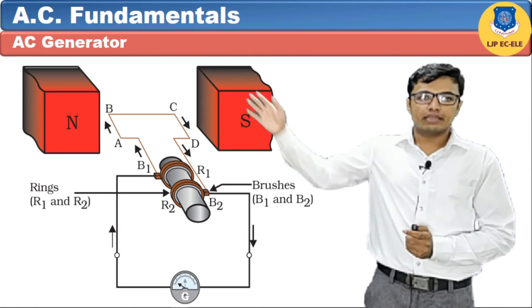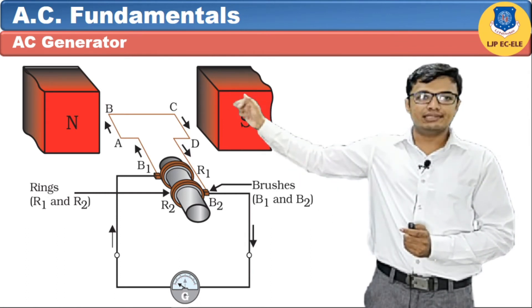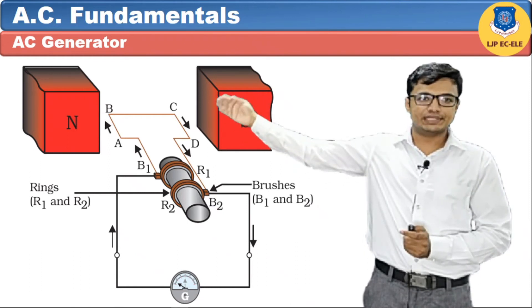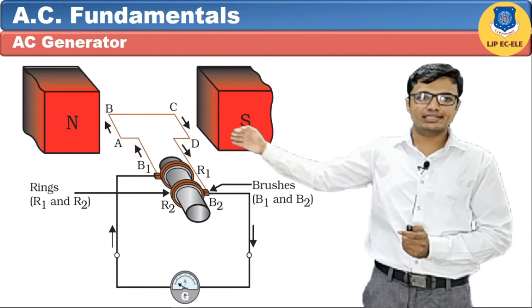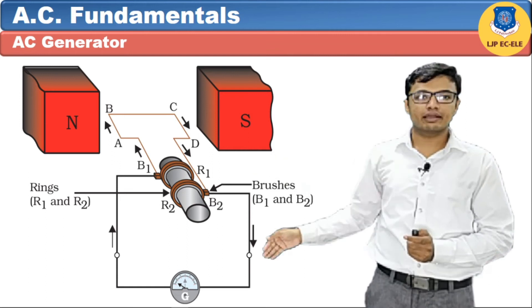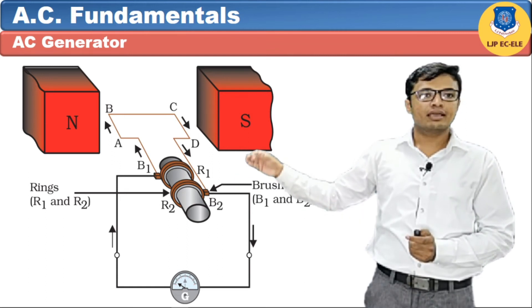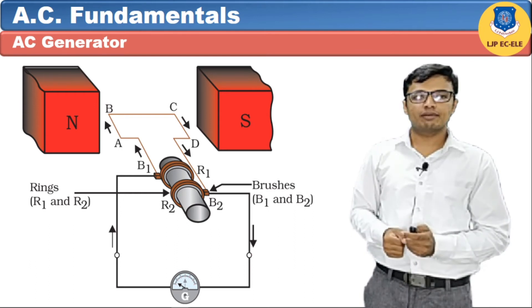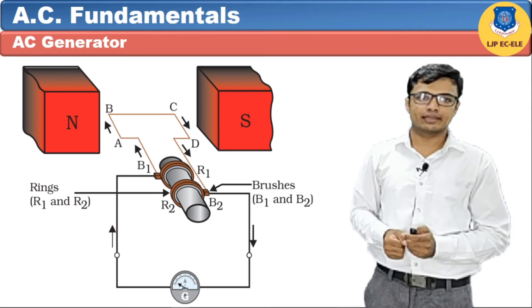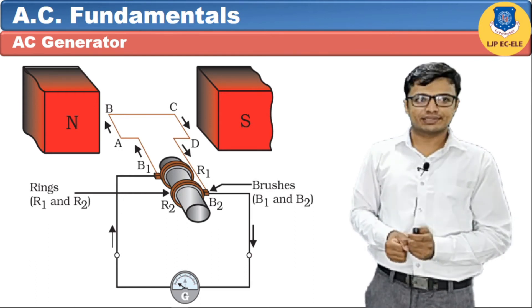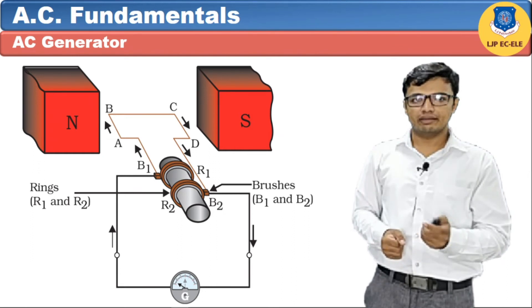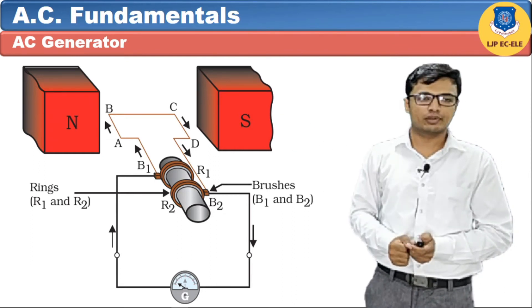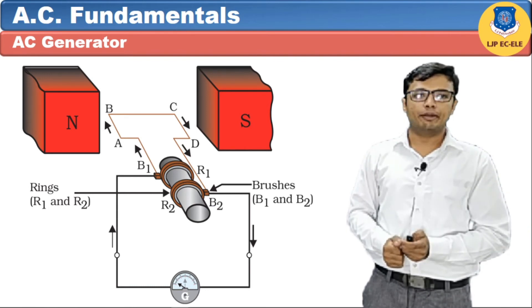During the positive half cycle, EMF is induced in the loop and current flows from A to B, B to C, C to D, D to ring R2. Current comes back to ring R1, brush B1, and returns to point A, generating one positive half cycle. After 180 degrees of rotation, the AB part interchanges position and comes under the influence of the S pole, so current reverses in the galvanometer.